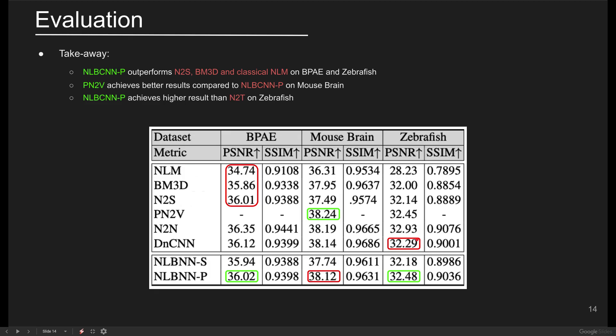An interesting observation in the zebrafish set is that NLBCNNP and probabilistic noise-to-void outperforms the noise-to-true method. This means that accessing the clean data does not always make the models more powerful while more efficient network designs can compensate for the missing ground truth.